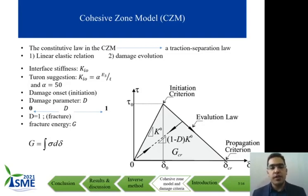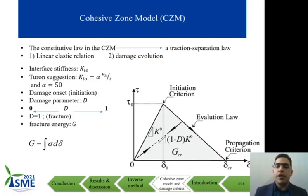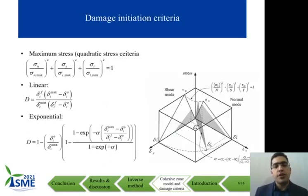In the next part, the damage parameter D is between 0 and 1. At 0, the damage initiation starts, and when D equals 1, the damage is fully developed and failure occurs. The fracture energy G is equal to the area under the cohesive law curve.